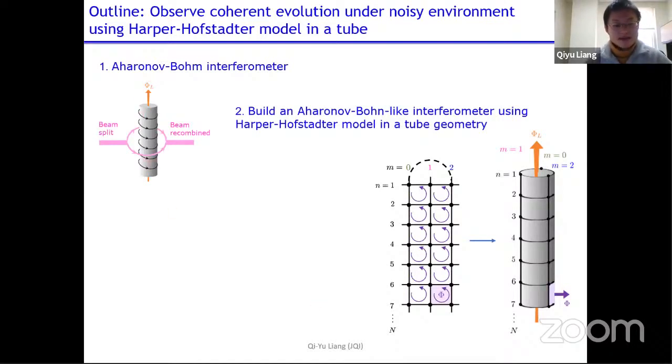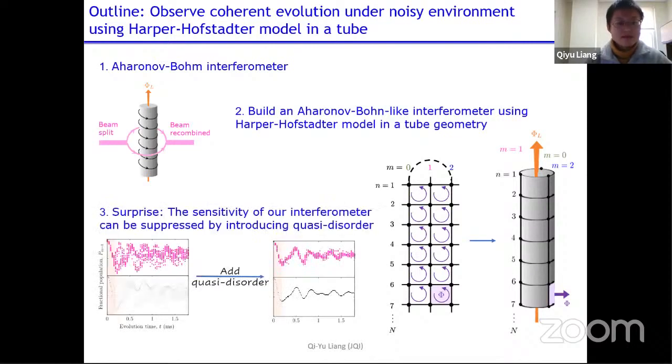And then when you observe the phase difference between the two paths, it is proportional to the magnetic flux along this long axis of the tube. Since our system is analogous to an Aharonov-Bohm interferometer, we expected to see the phase sensitivity to this longitudinal flux phi L. We sort of observed it, but to our surprise, the sensitivity can be suppressed by introducing quasi disorder. So here, this graph, each dot is an experimental run, and each experimental run, we associate the system with a different longitudinal flux. So the variance of these dots shows you the phase sensitivity of the system to phi L. And if you add a quasi disorder, you can see this sensitivity basically went away.